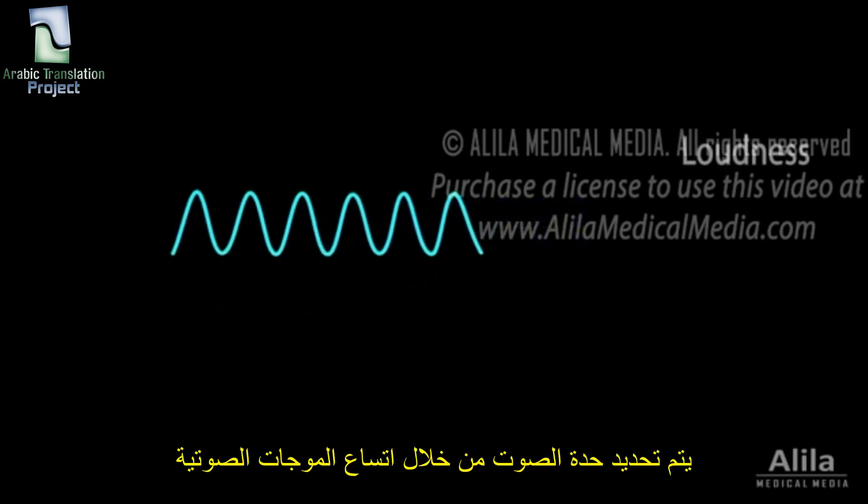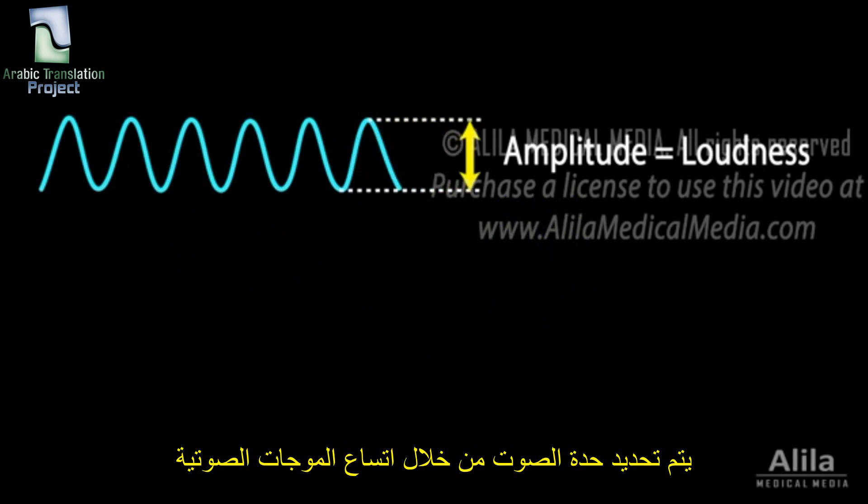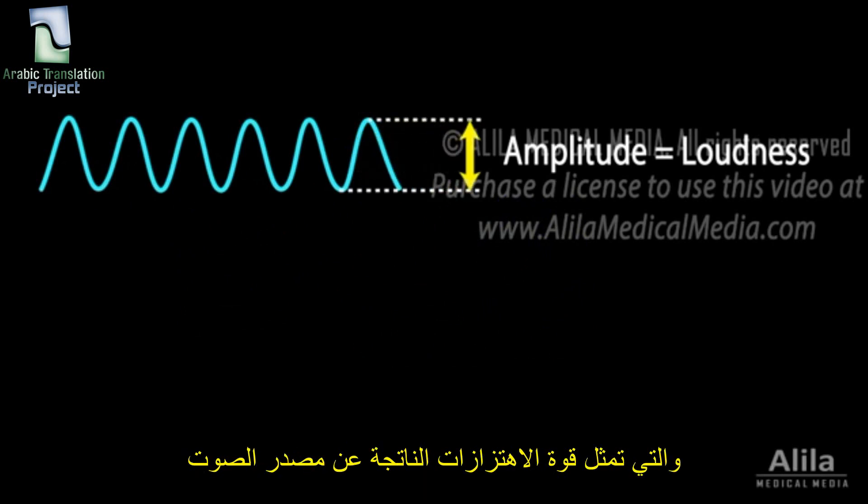The loudness of a sound is determined by the amplitude of sound waves, which represents the strength of vibrations produced by the sound source. The stronger the vibrations, the higher the amplitude of sound waves, and the louder the sound.